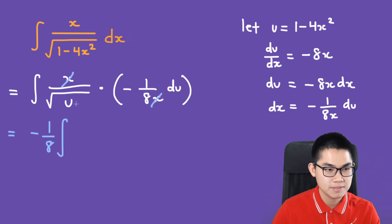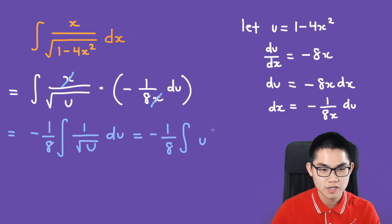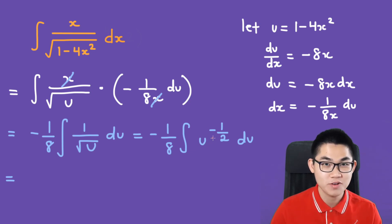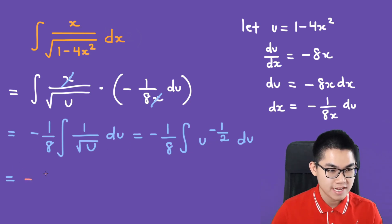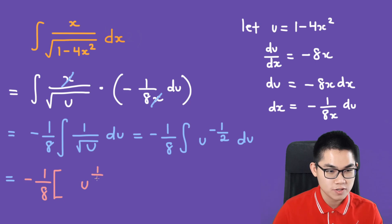So we have negative 1 over 8 times the integral of 1 over the square root of u du. We can also rewrite this as negative 1 over 8 times the integral of u to the power of negative 1 over 2 du. We need to find the antiderivative of u to the power of negative 1 over 2, which is u to the power of positive 1 over 2.